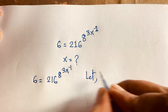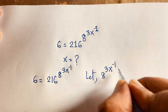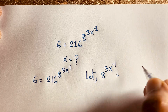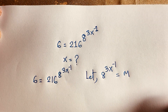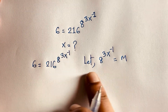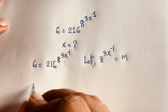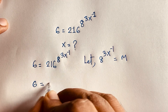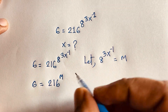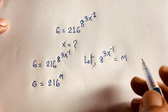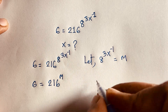Here the exponent is 8 to the power 3x minus 1. Let that equal m. So according to this, if I put this value in the exponent, we'll find out here is 6 is equal to 216 to the power m. I put this value here.